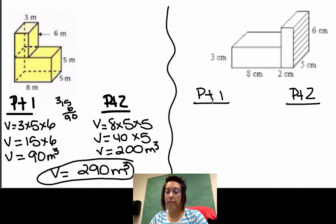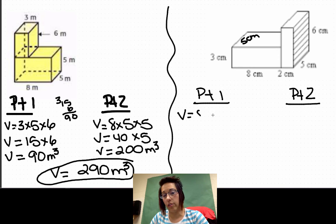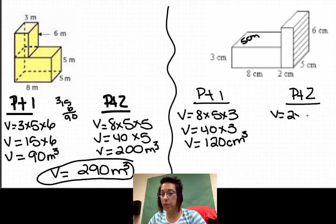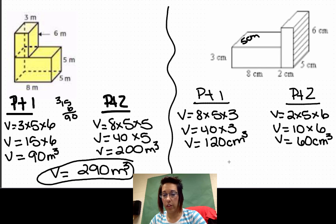Let's go ahead and look at this last one. It's kind of broken up right here for us. We need to figure out how deep it is, so that would be 5 centimeters. Volume equals 8 times 5 times 3. Volume equals 40 times 3. Volume equals 120 centimeters cubed. Part two, we have 2 times 5 times 6, 10 times 6, so volume equals 60 centimeters cubed. Volume equals 120 plus 60 is 180 centimeters cubed.